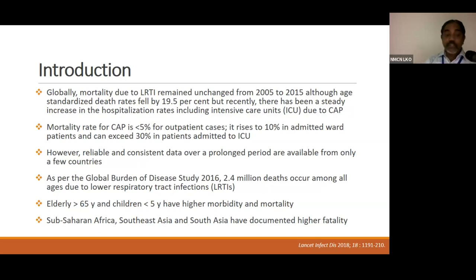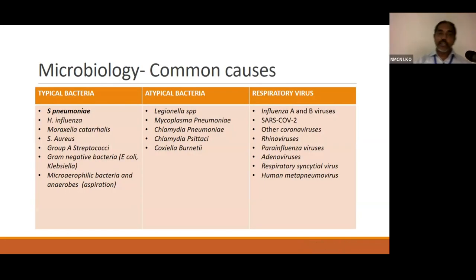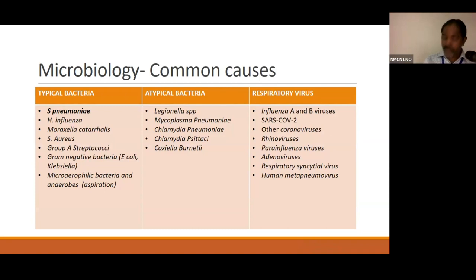Sub-Saharan Africa, Southeast Asia, and South Asia have higher documented fatality. The common organisms incriminated in etiology are typical bacteria, atypical bacteria, and various respiratory viruses. The commonest among bacteria is Streptococcus pneumoniae, and amongst the atypical bacteria, Mycoplasma and Chlamydia are common infections. After the advent of SARS-CoV-2, it is now an important cause of respiratory pathogen causing pneumonia.